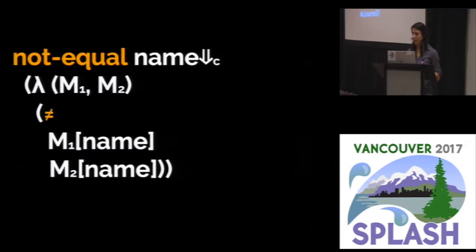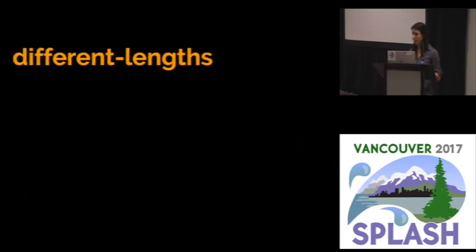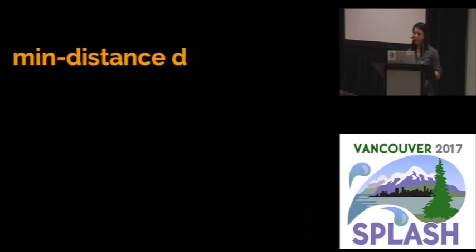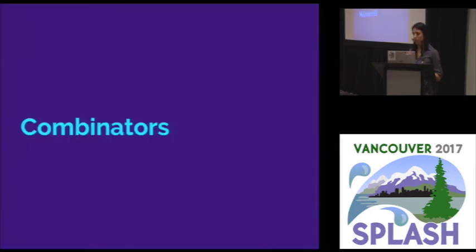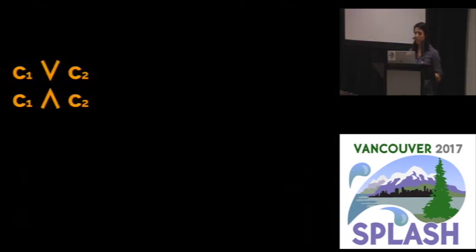So inequality, for example, is exposed as not equal. But if that's not enough, we can also ask for strings of different lengths. Or we can ask for strings at a minimum distance. And all of these are really just instances of relations. So really we could put any relation between two strings here. And we also have some combinators to combine these constraints, like OR and AND.